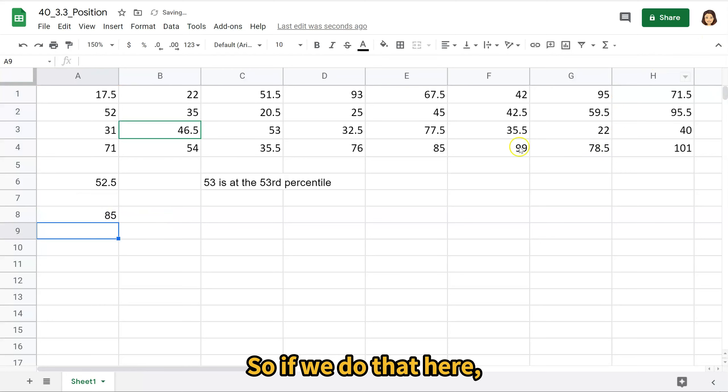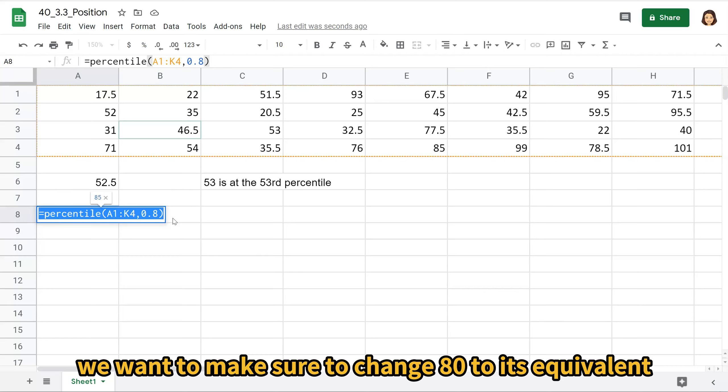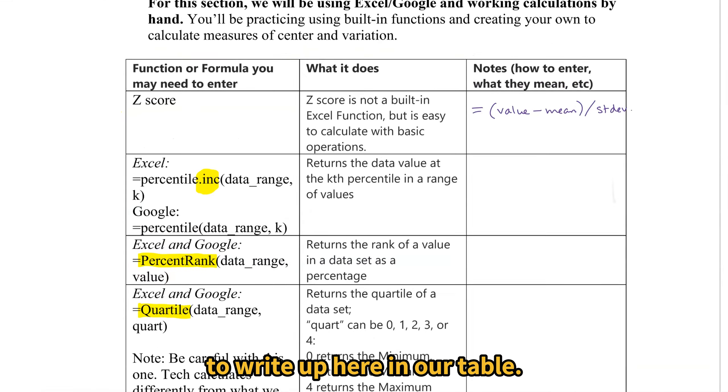So if we do that here, when we're putting in our percentile for 80 percent, we want to make sure to change 80 to its equivalent decimal value. That's something that might be important to write up here in our table.